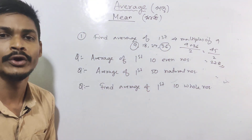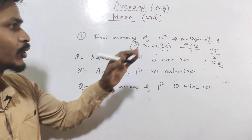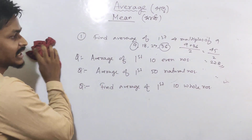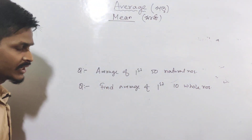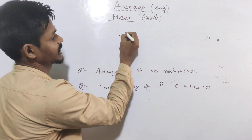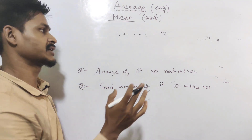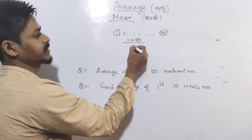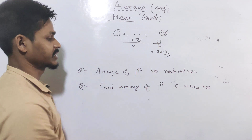The sum equals total terms into average. Next: find the average of the first 50 natural numbers. You can find it using the formula: first plus last divided by 2, which is 1 plus 50 divided by 2, giving 51 divided by 2 equals 25.5.